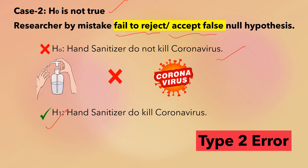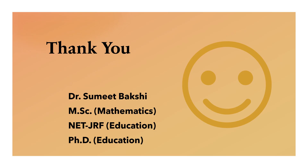The researcher may conclude that manufacturing of hand sanitizer should be stopped. We will miss an effective hand sanitizer in the market, but it is not as dangerous as Type 1 error. If a researcher commits Type 1 error, there are chances that a sanitizer will be available in the market which is actually not effective on coronavirus.